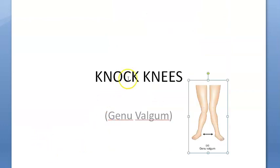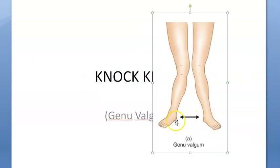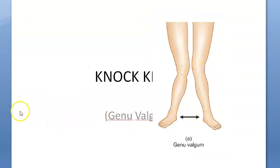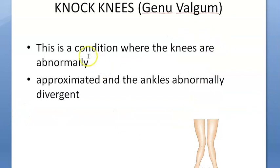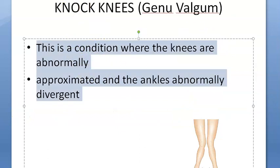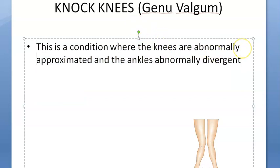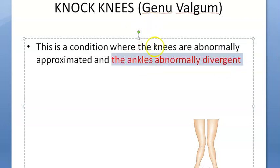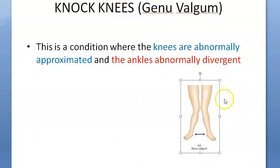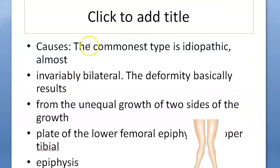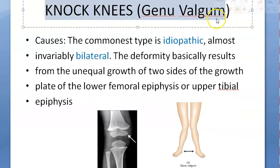This is knock knee, but actually they are referring to the heels being apart. We will remember it as knees being together — knock knees. So this is a condition where the knees are abnormally approximated and the ankles are abnormally divergent. Both are abnormal: knees are abnormally approximated and the ankles are abnormally divergent. Now we are looking at knock knee or genu valgum.